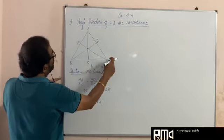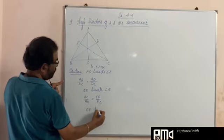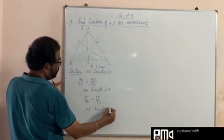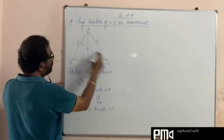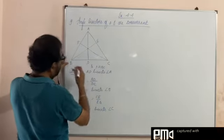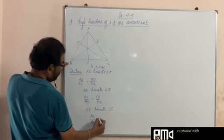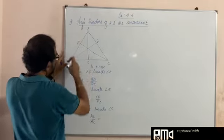Then CF bisects angle C. So here what you get? AC by BC is equal to AF by FB.